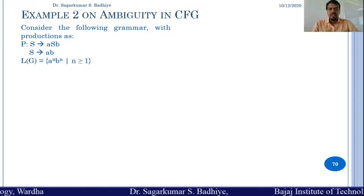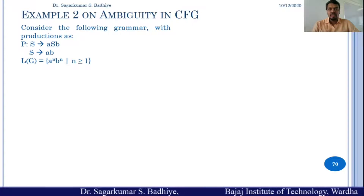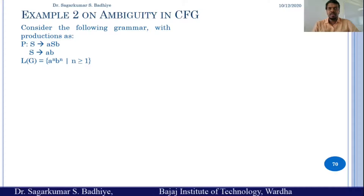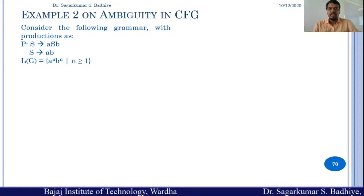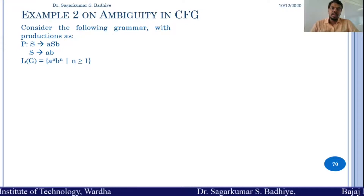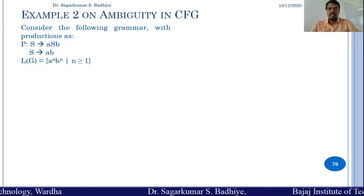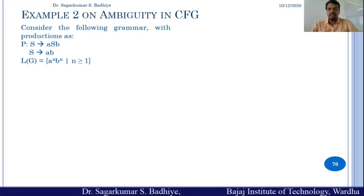To check whether the given grammar is ambiguous or not, we need to find a string that can be derived by using two different parse trees or two different leftmost derivations. If we are not able to find such a string, we say that the grammar is unambiguous.